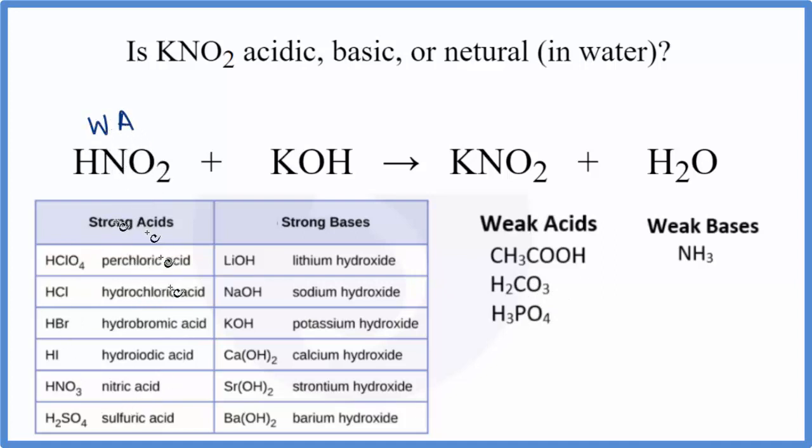These are our major strong acids. For KOH, we look at strong bases, and it's right here. So KOH, that is a strong base. So now we know the strength of the acid and the base in our neutralization reaction.